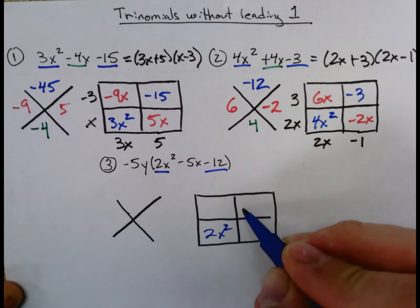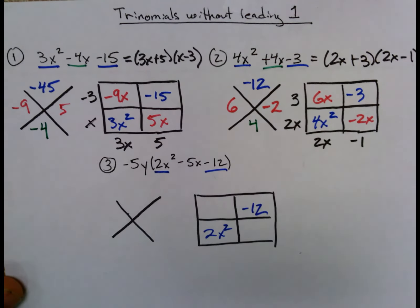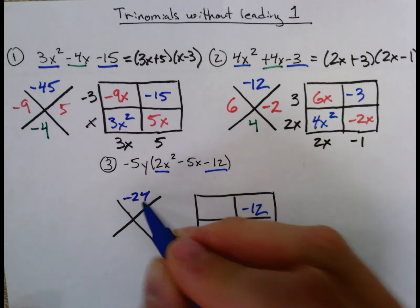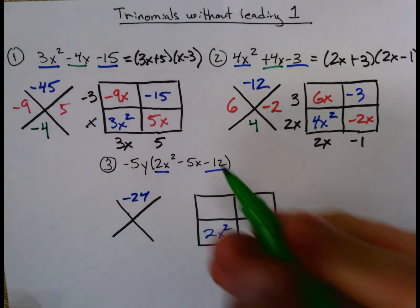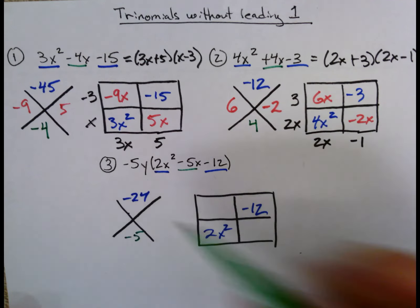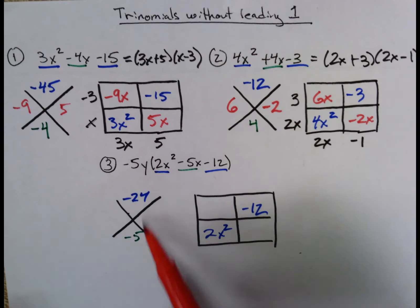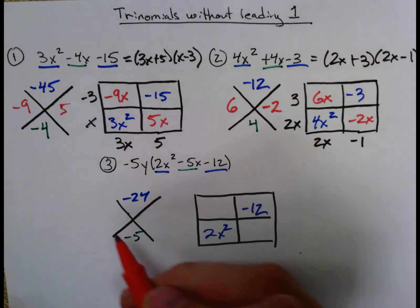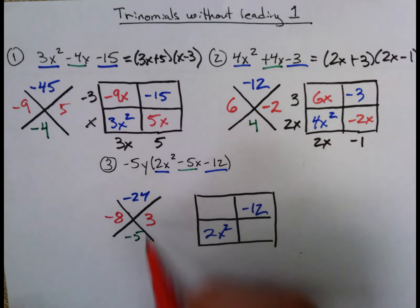And that means that when you multiply those by each other, that gives you -24. Then you have a -5 that goes in the bottom. And two numbers that multiply to -24 and add up to -5 would be -8 and +3.